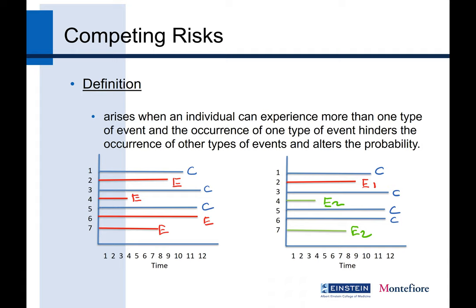In a normal survival analysis situation, you are interested in time to an event — that's the left-hand side chart, which most of us are familiar with and is very commonly used. People are followed up to an event, and some are censored. But in a competing risk situation, you can have more than one type of event: E1 is event type 1, and E2 is event type 2. Most of the time, we use regular survival analysis for those situations, ignoring the competing risks, assuming they are censored, and analyze them.